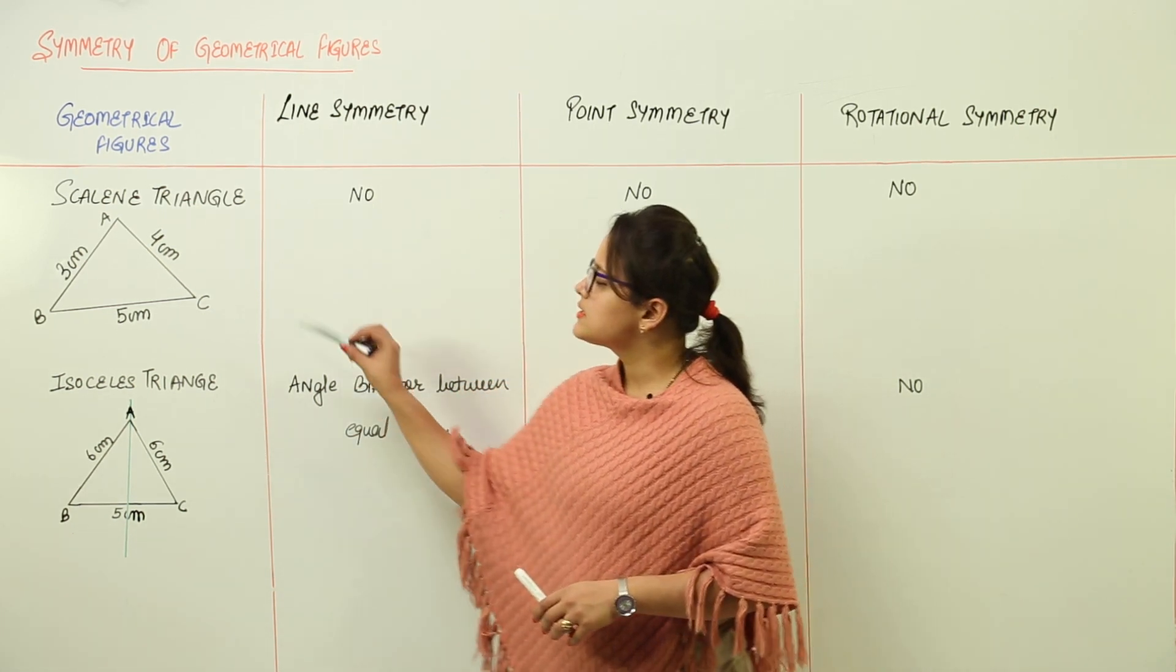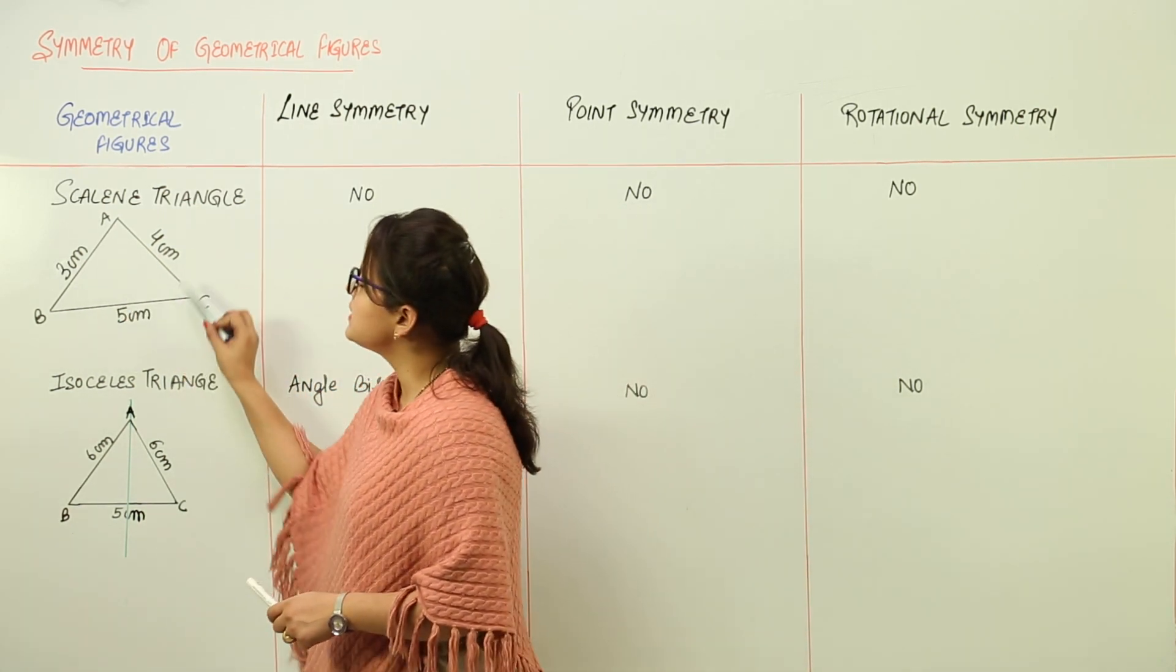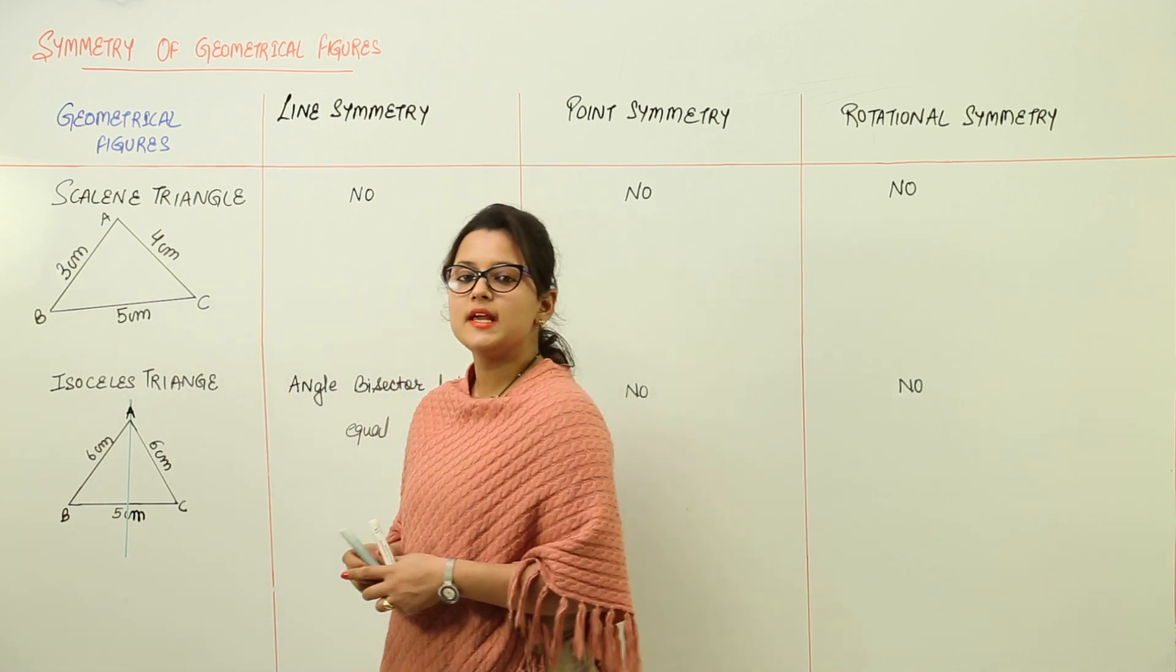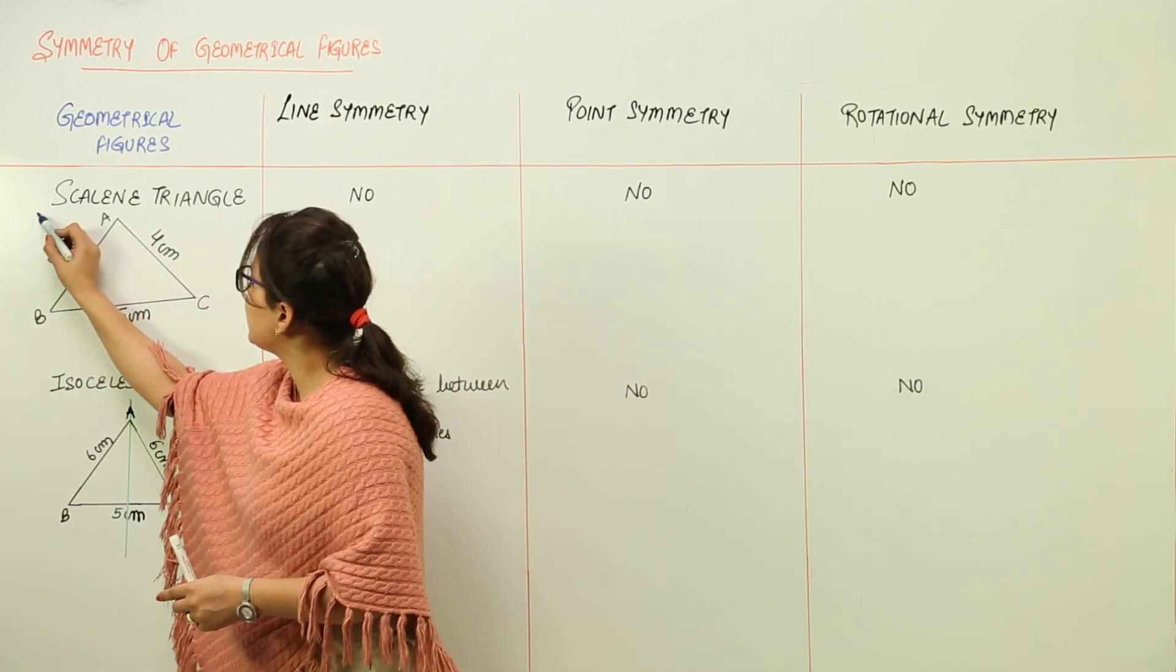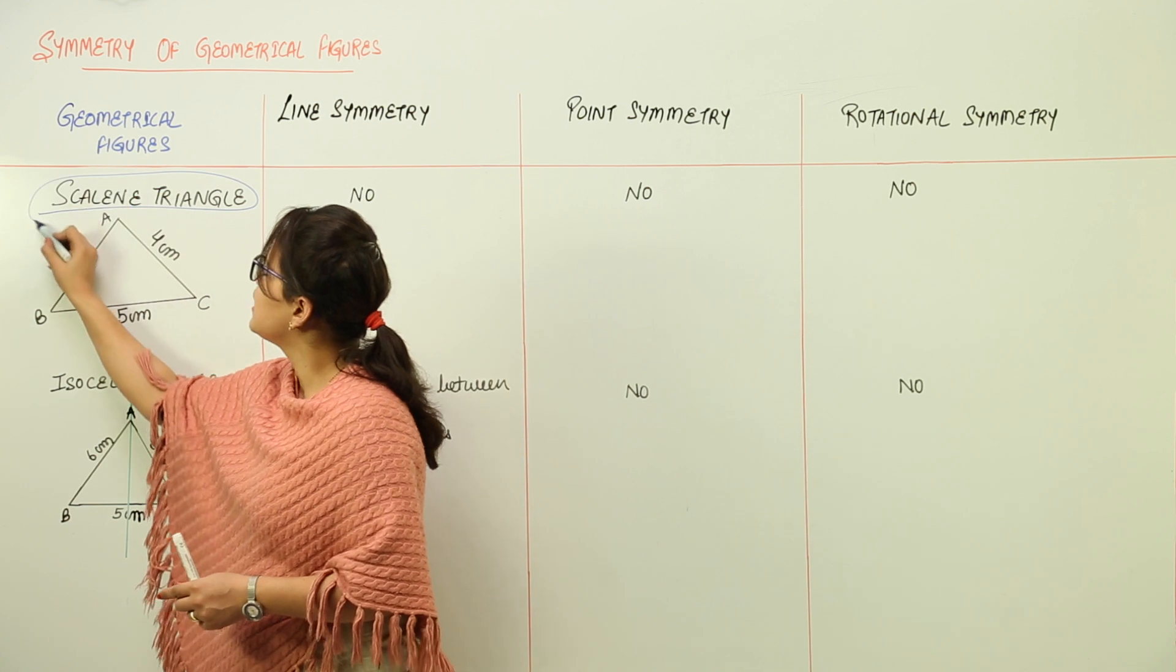Scalene triangle. A scalene triangle has all three sides different because a scalene triangle is a triangle that has all three sides different.